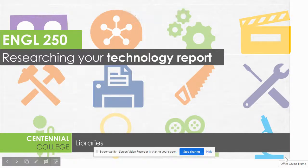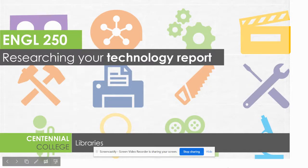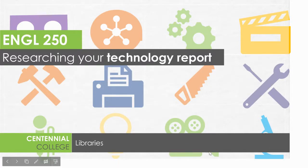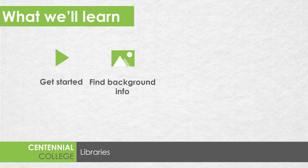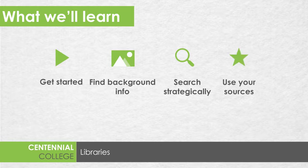Hi everyone. I know you're working on your technology report for English 250, and if you're not sure where to start, Centennial Libraries can help. In this video we're going to look at how to get started accessing library resources, finding some background information and choosing a problem to investigate, searching strategically for evidence, and finally using the information you found in your technology report by citing it with APA.